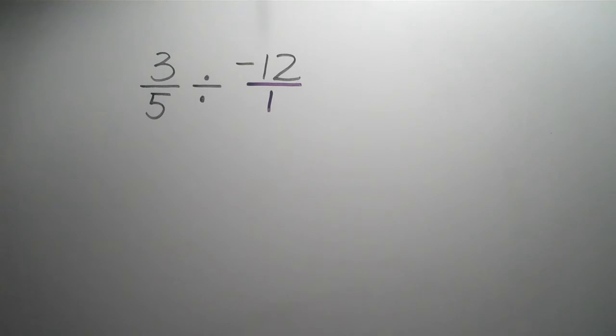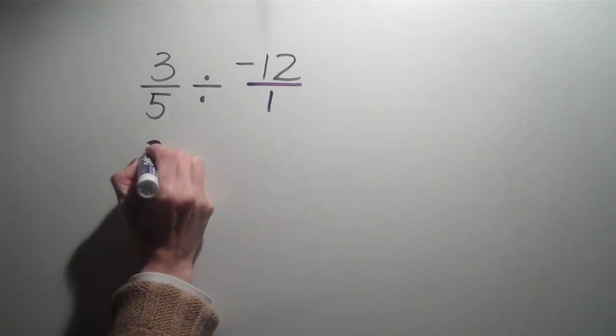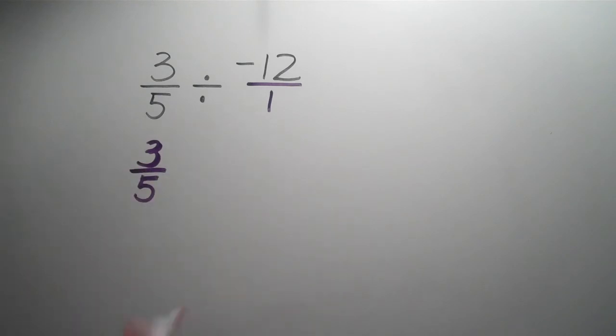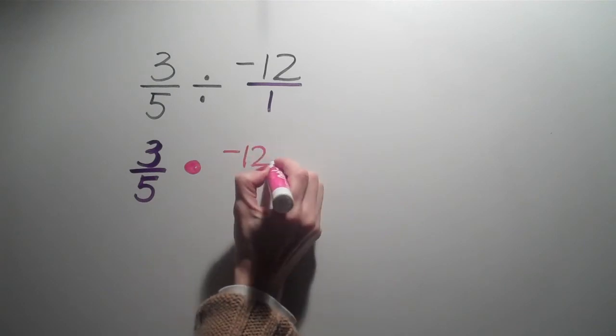So now we can do our keep change flip. 3 fifths stays the same. We're going to change the division to multiplication, and we're going to flip it. We keep that negative sign now.